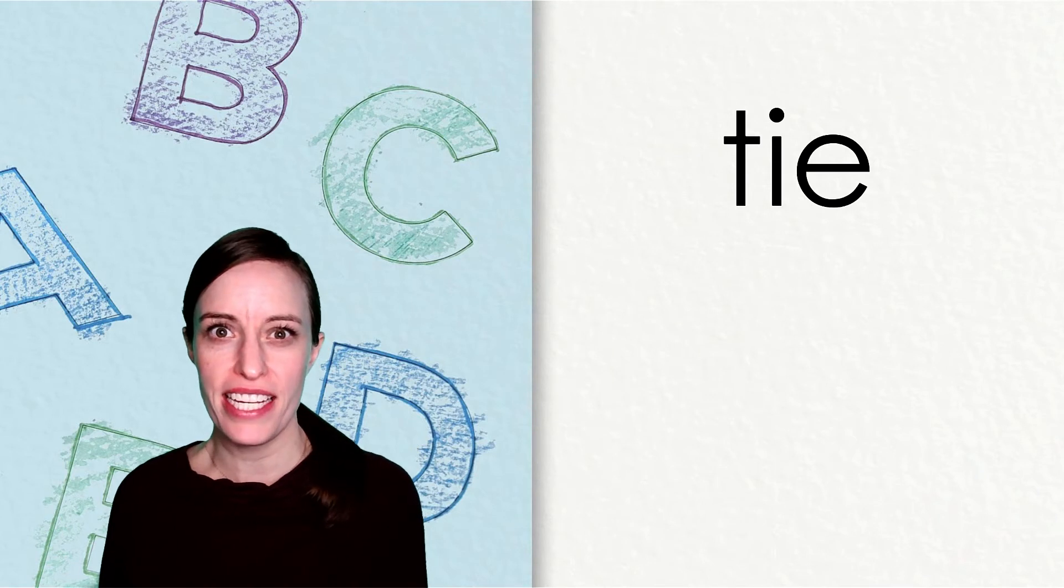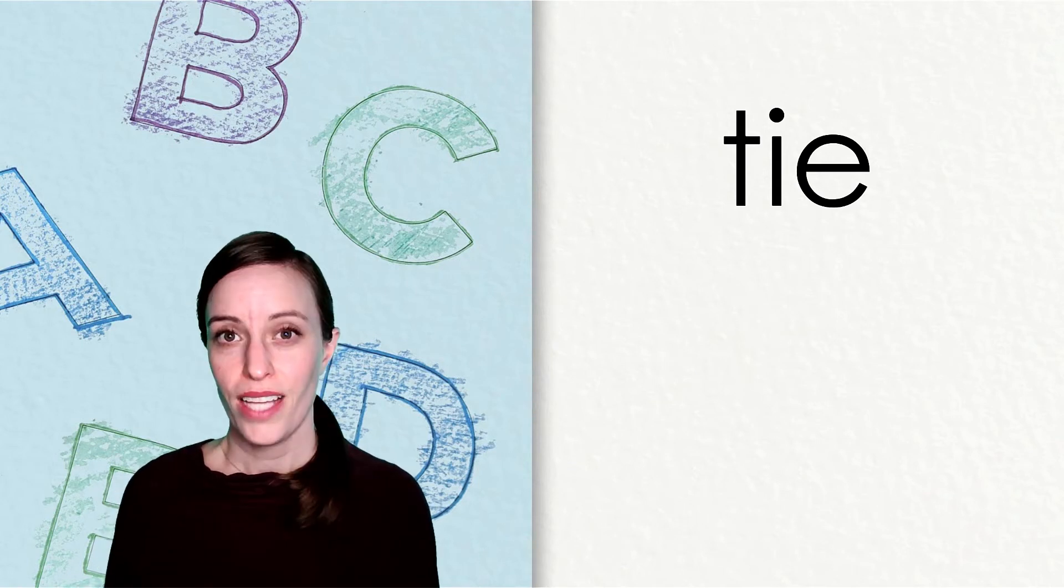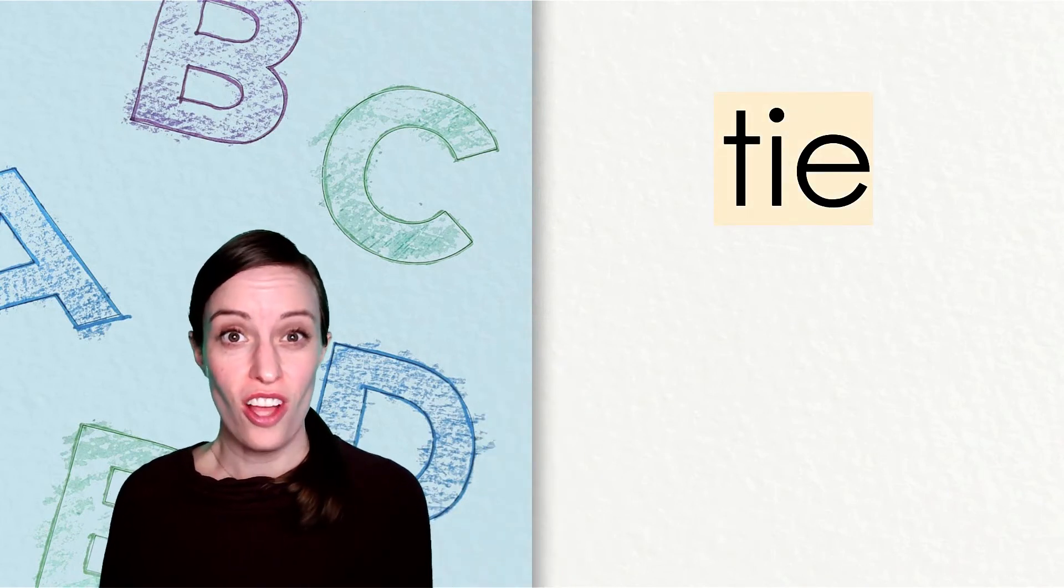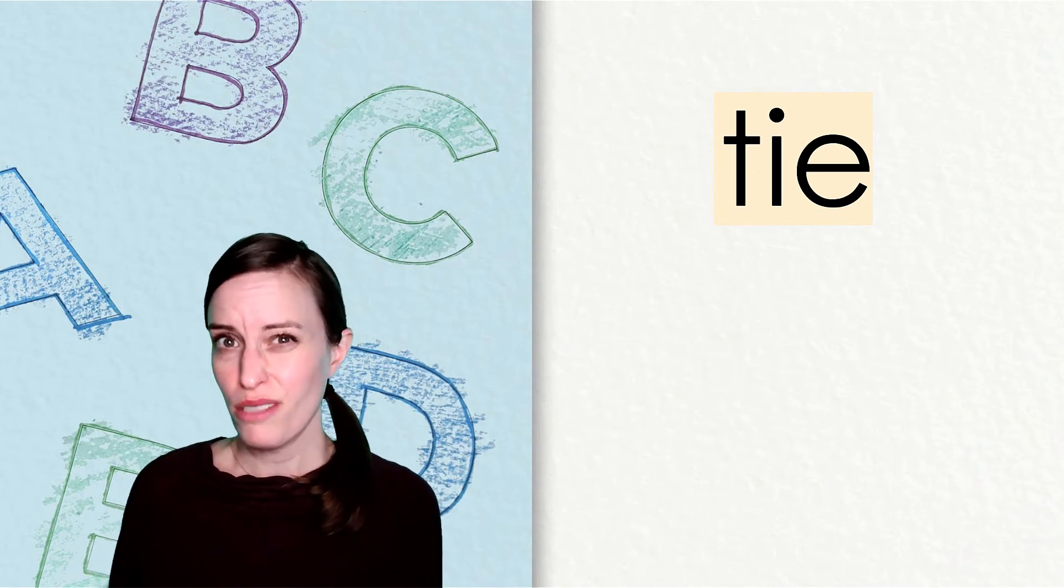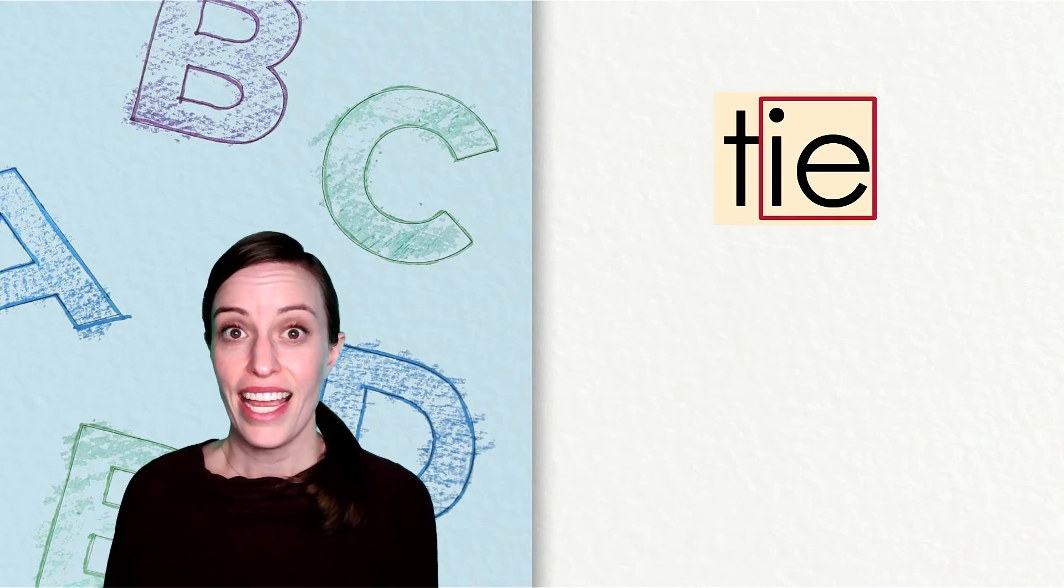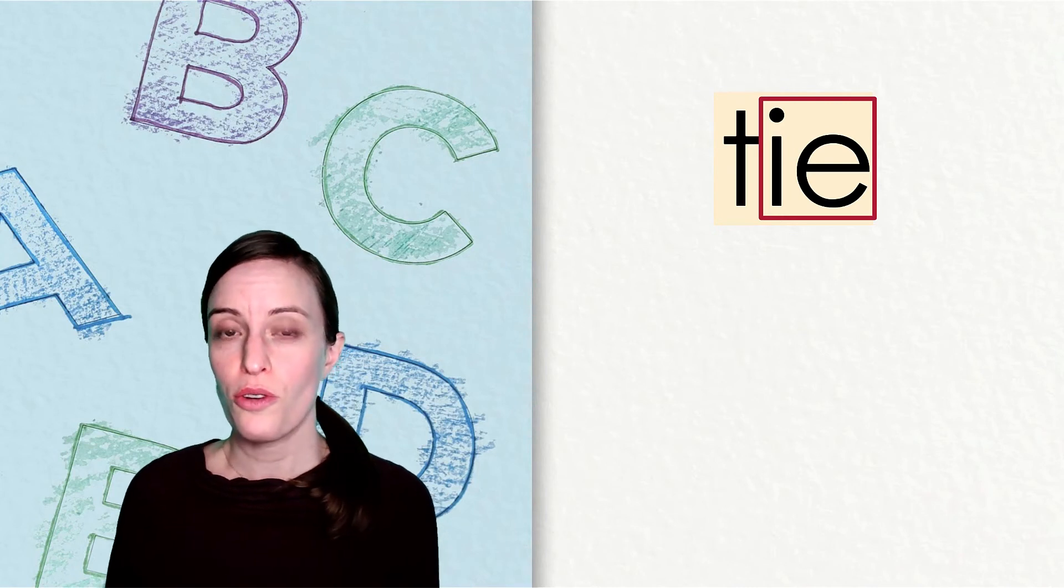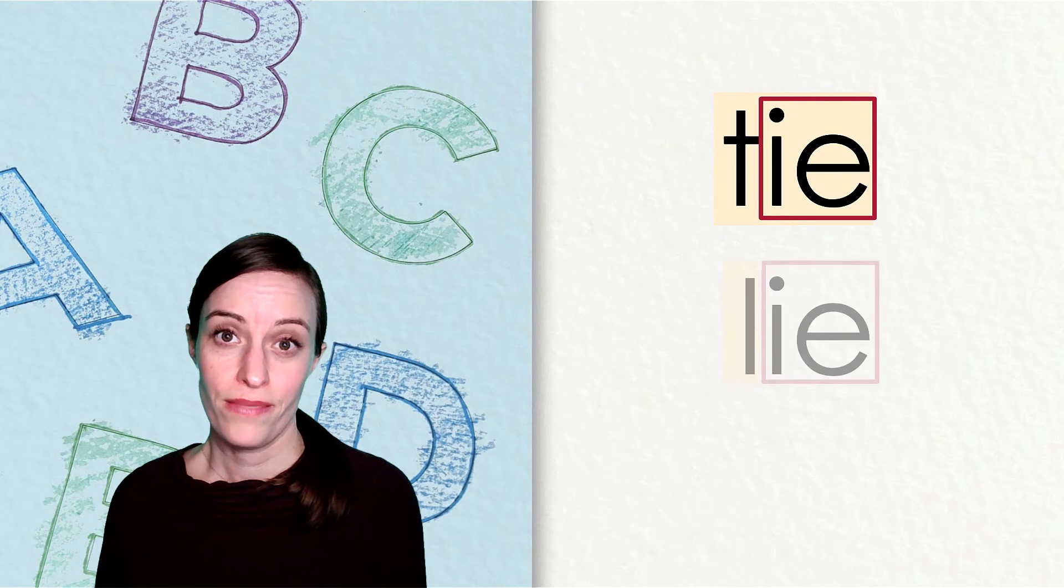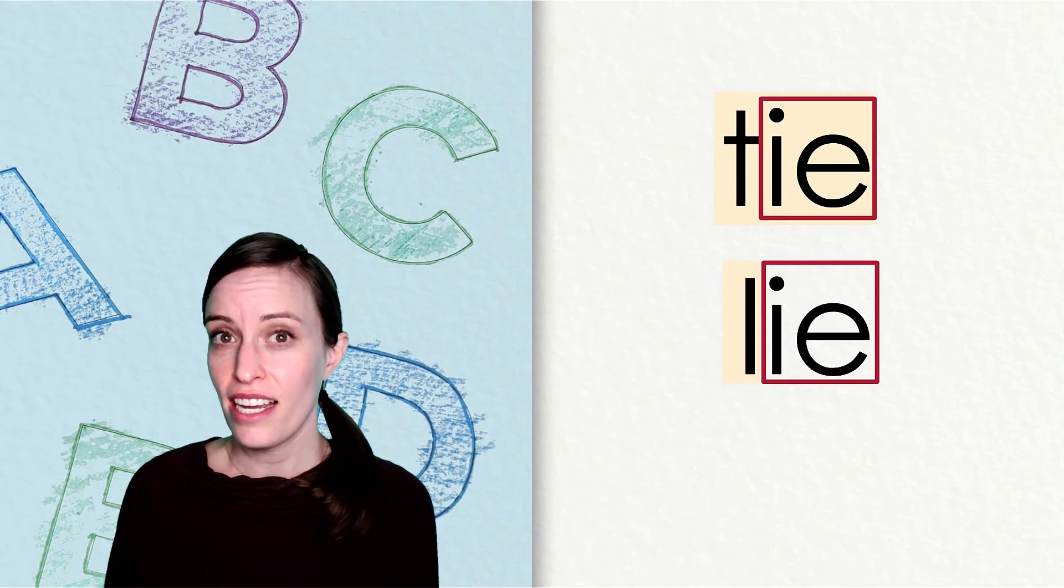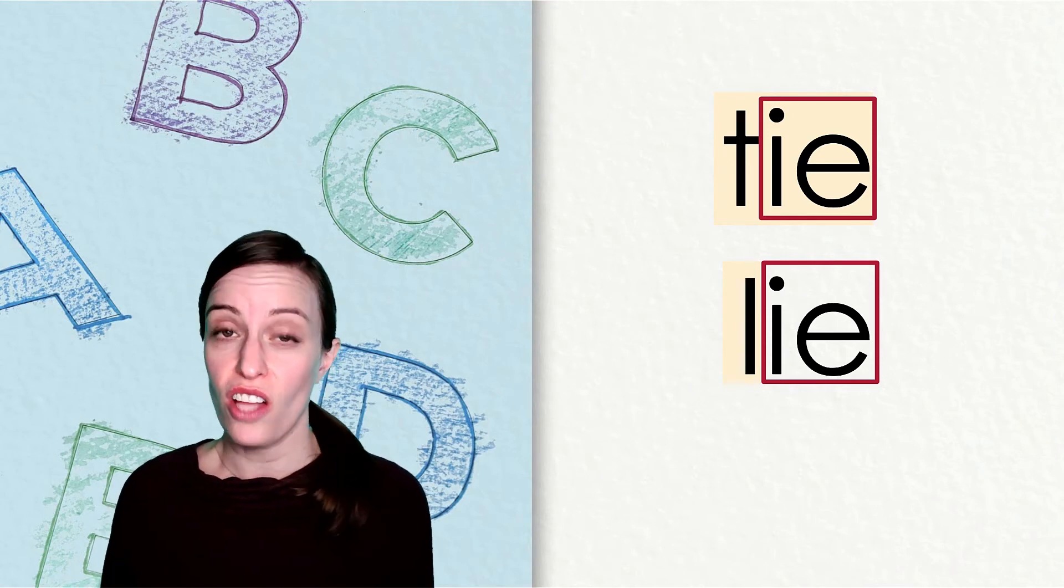Now, we are going to be decoding detectives. We are going to look for new vowel teams that make the long i sound. The first word is tie. T-i. I heard the long i sound at the end of this word. Can you spot the vowel team that is making the i sound? It's the ie vowel team. How could we change this word tie to lie? We changed the beginning sound. Yes! We have to change that letter t to a letter l. Now the word is lie. We still have that vowel team ie making the long i sound.